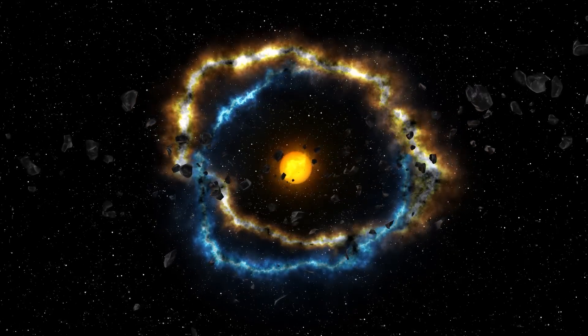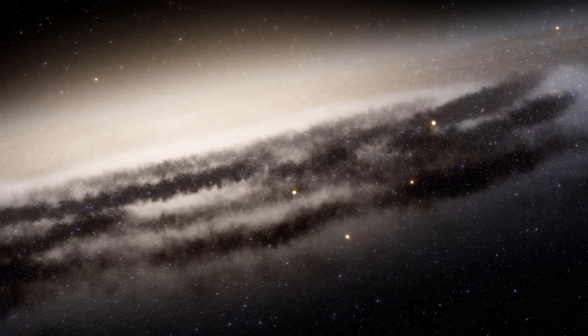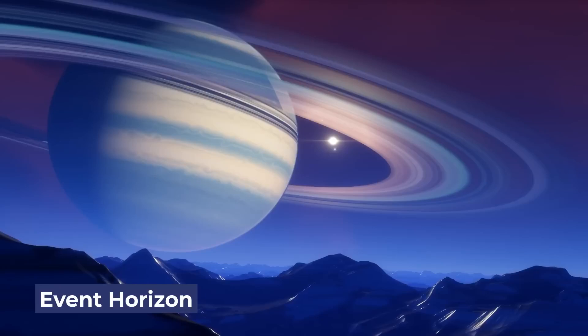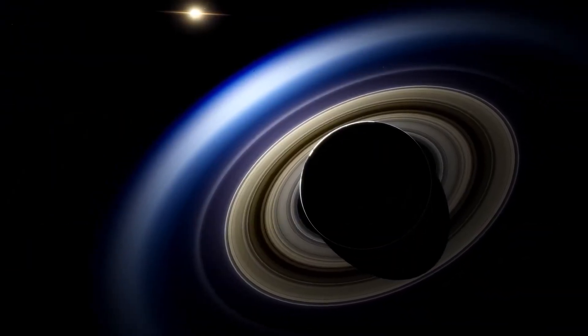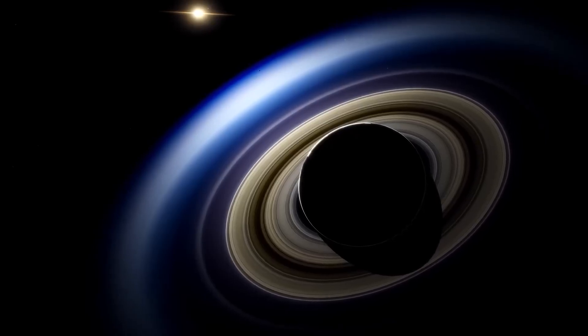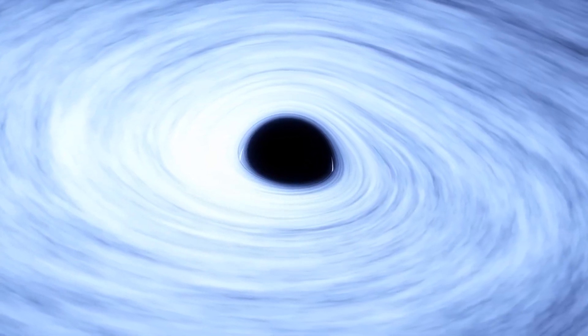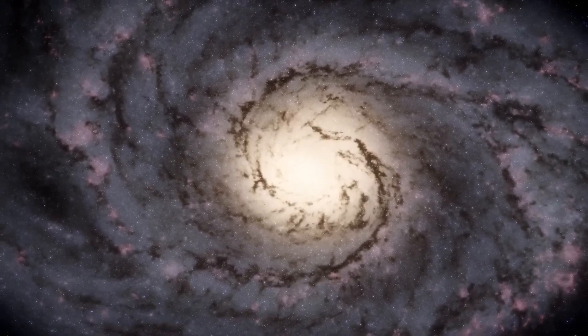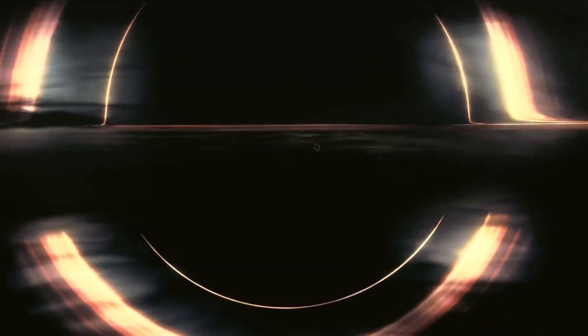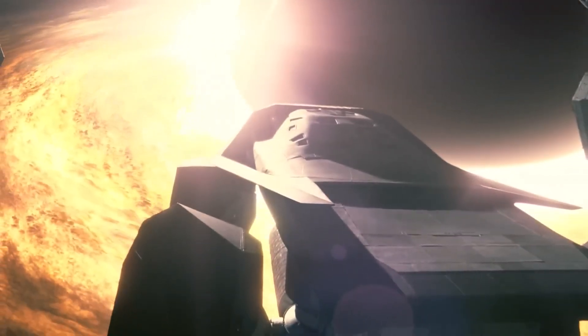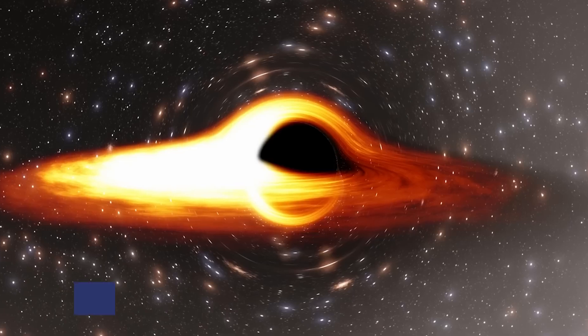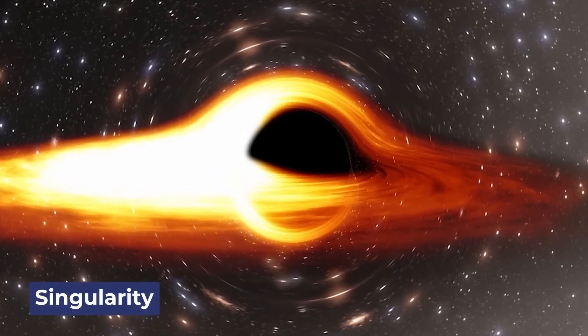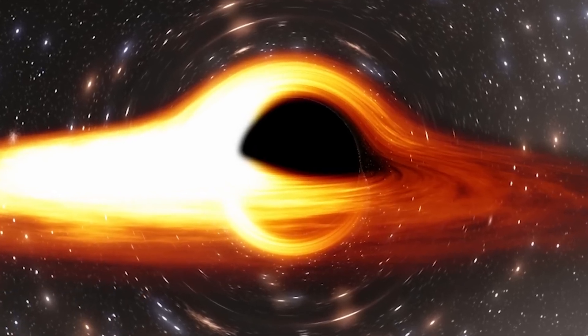Black holes are super mysterious and have three layers. Imagine it like a really powerful vacuum cleaner. The outer layer is the event horizon, like a boundary or a point of no return. Once something, like light or objects, crosses this boundary, it gets trapped forever because the black hole's gravity is too strong. Inside the event horizon, there's another layer called the inner event horizon. It's like a deeper part of the black hole that's even harder to escape from. And finally, at the very center of the black hole, there's something called the singularity, which is like the heart of the black hole where all its mass is concentrated. The singularity is the super dense heart of a black hole where all its mass is squeezed into an incredibly tiny space. It's like a point in the fabric of space and time where everything gets packed really tightly.